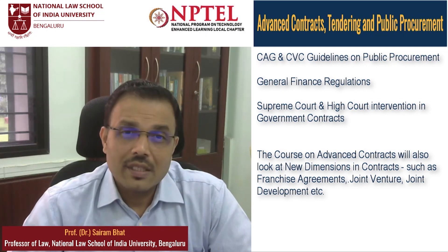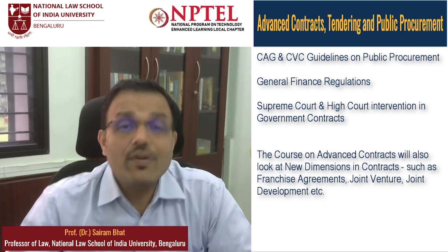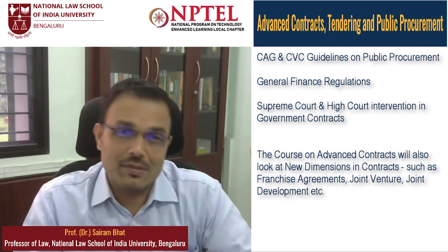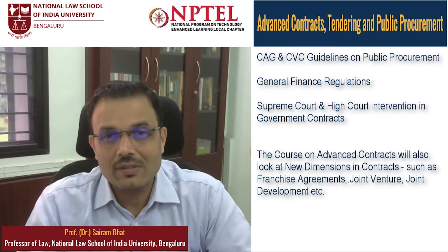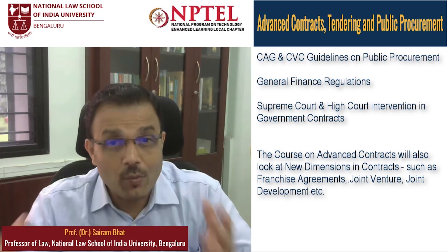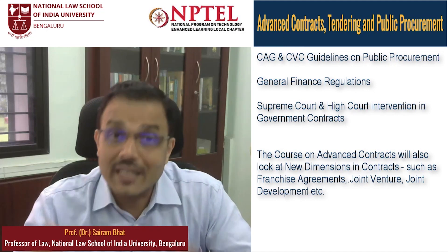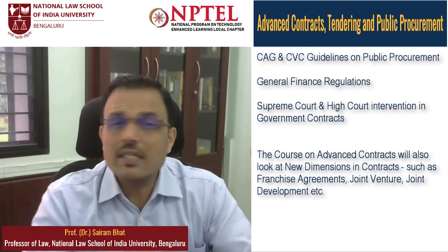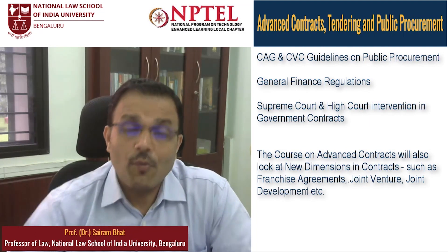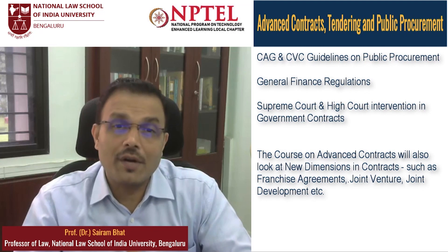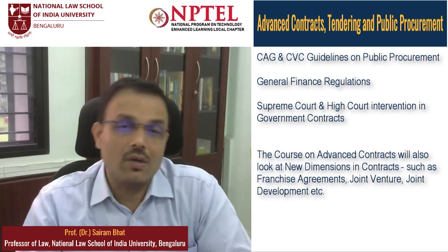In advanced contracts, we have looked at new dimensions — franchisee contracts, joint venture agreements, and joint development arrangements. There are several new dimensions in contracts, for example, modern-day contracts may include what is known as an ESCO agent clause.